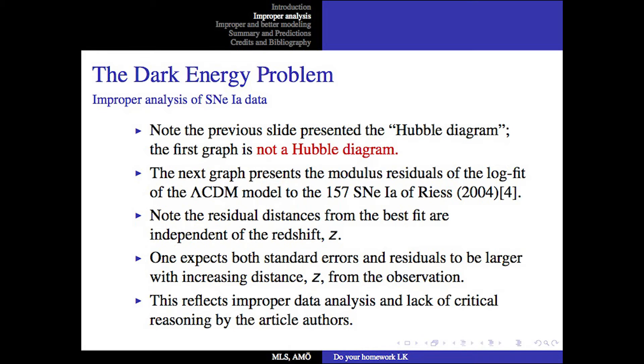The next graph presents the modulus residuals of the log fit of the lambda cold dark matter model to the 157 supernovas collected by Riess and presented by him in an article in 2004. Note the residual distances from the best fit are almost independent of the redshift. One expects both standard errors and residuals to be larger with increasing distance from the observation. This reflects improper data analysis and a lack of critical reasoning by the article authors.